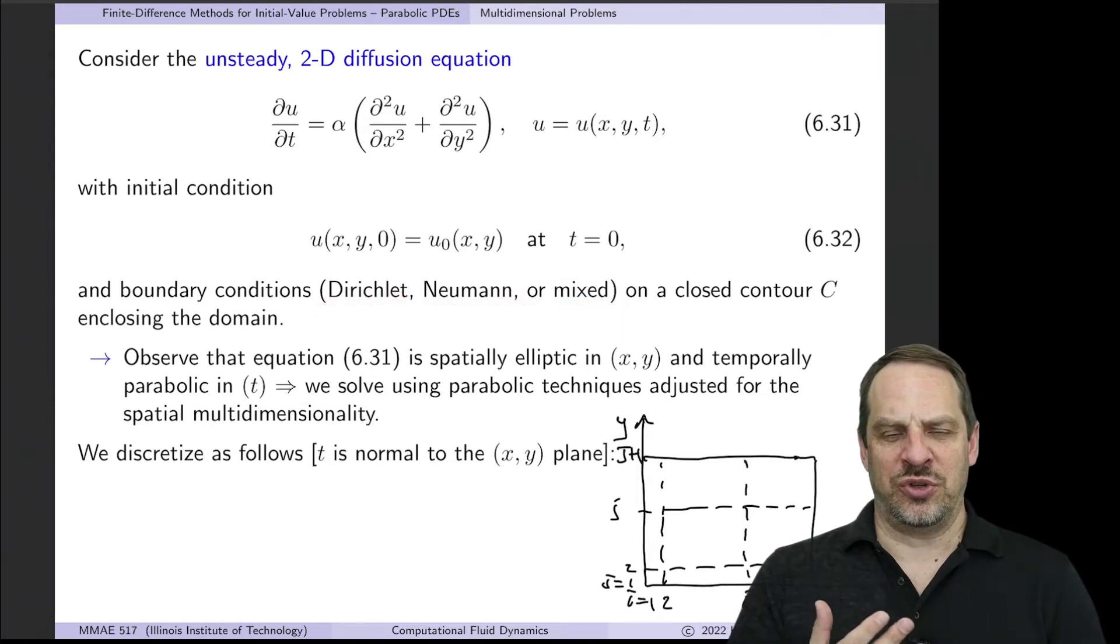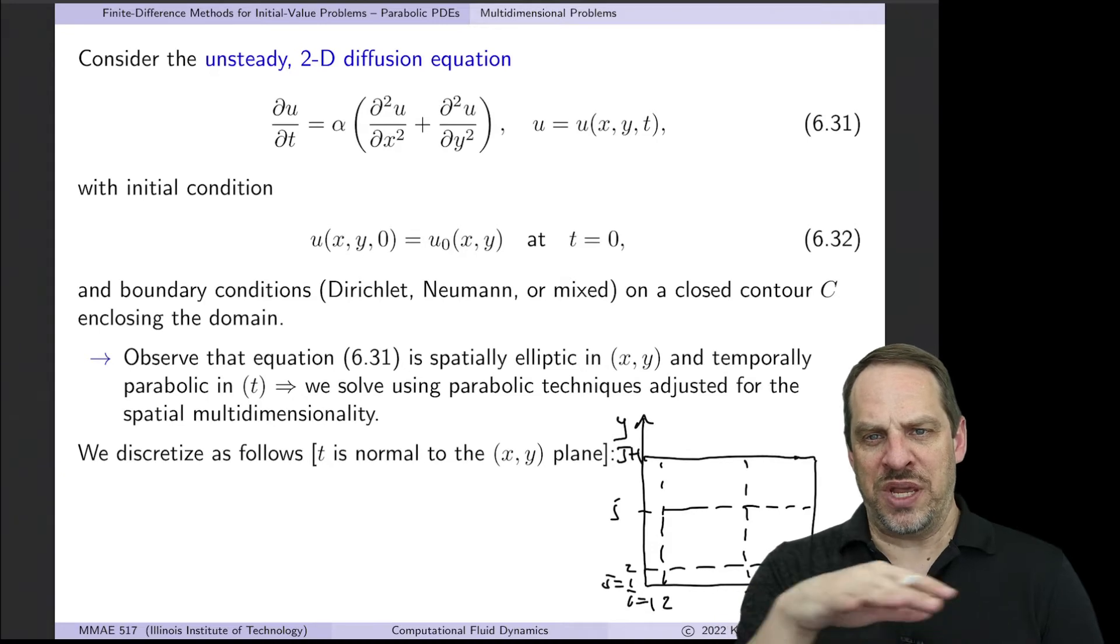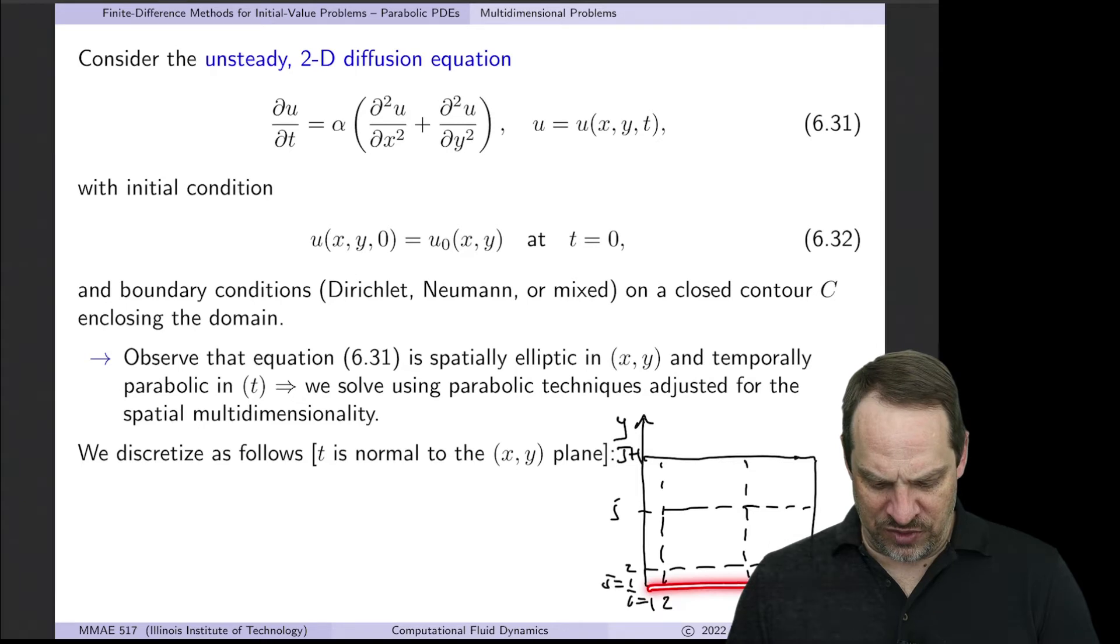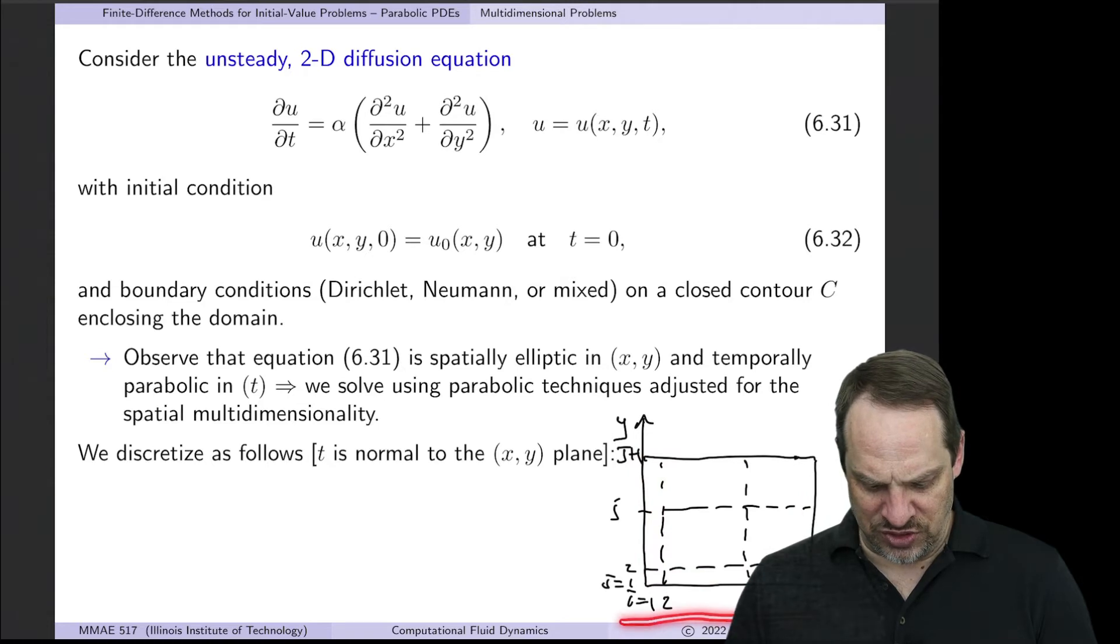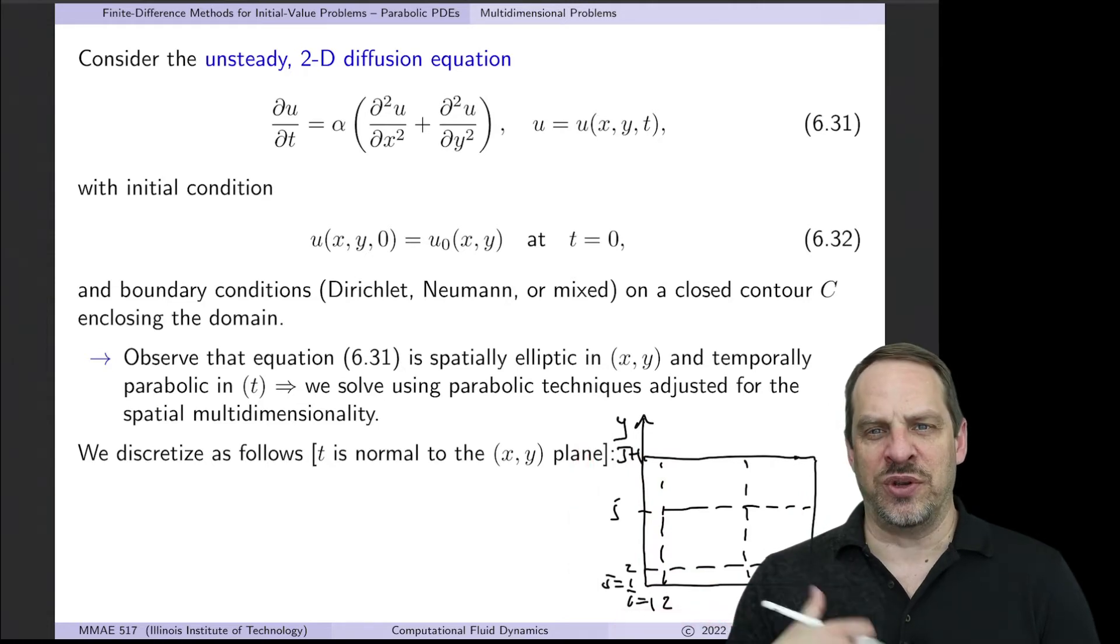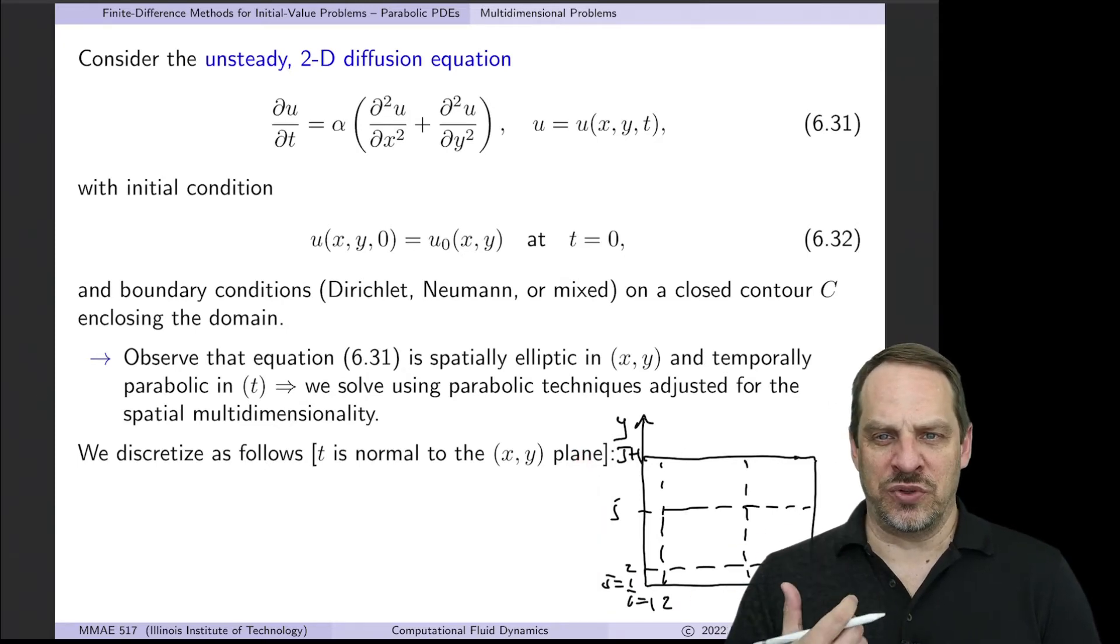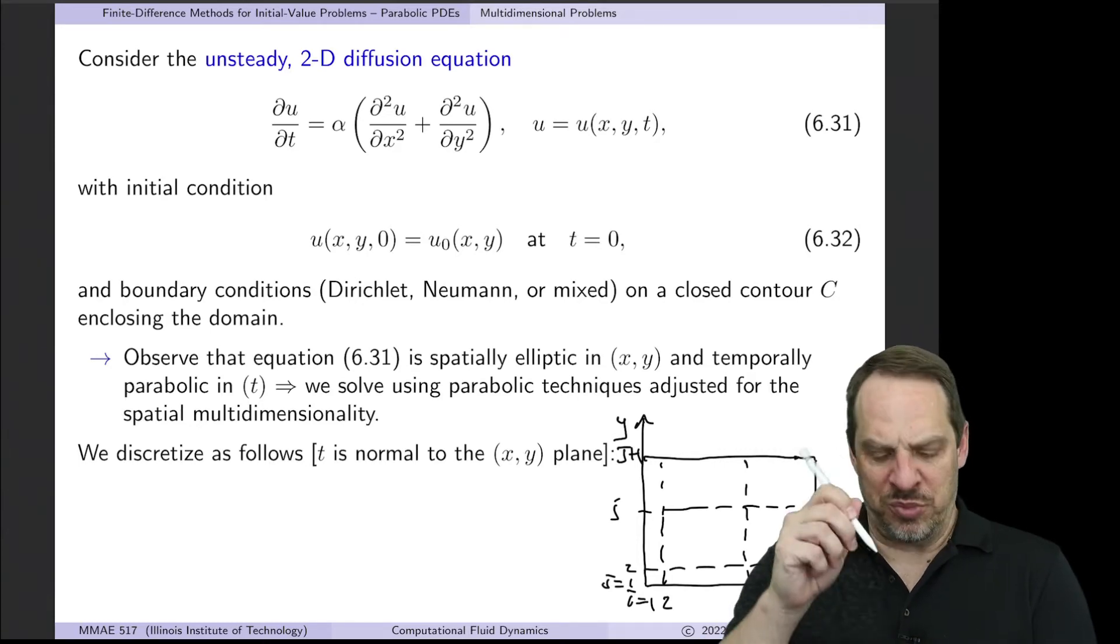And now we have an additional challenge in terms of representing these graphically. So we have a two-dimensional plane, which will be in the page, and then time is going to be up out of the page. So you see here, for example, here's my x, y coordinates, my spatial dimension. We'll use the same notation as we did for elliptic problems, i going from one to capital I plus one, j going from one to capital J plus one, so we have capital I and capital J intervals in each of those two directions respectively. And then time will be out of the page.